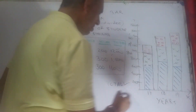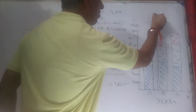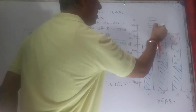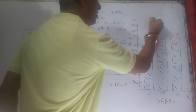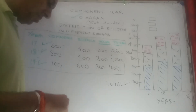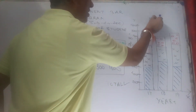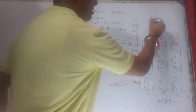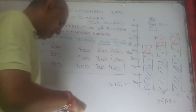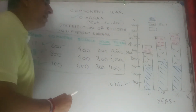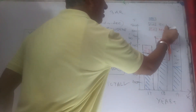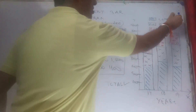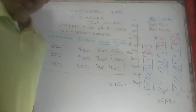Let me also present through the index — little squares representing the three streams as used. Blue lines for commerce, crosses for science, and circles for humanities. I hope all of you are understanding it. That covers the component bar diagram. Thank you.